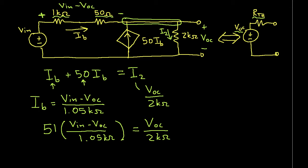Now we want to solve this equation for VOC in terms of VN. And probably the simplest way to do that is to multiply both sides of the equation by 2k ohms. So we do this. And on the right-hand side of the equation, the 2k ohms cancel. On the left-hand side of the equation, we have 2k ohms times 51 divided by 1.05k ohms. And that's all times VN minus VOC.